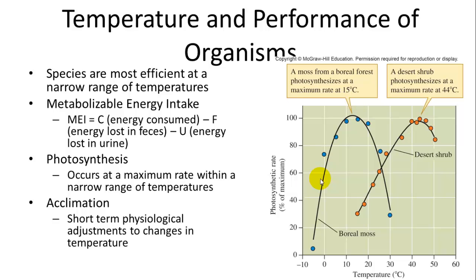With that allocation, species are most efficient at a narrow range of temperatures. Within that narrow range, their enzymes work best, heat transfer is optimal, and all metabolic processes use energy most efficiently. Beyond that, proteins, enzymes, and other things don't work properly or not as efficiently. The metabolizable energy intake, or MEI, is a function of the energy consumed minus the energy lost in feces and urine. The amount of energy within an organism is proportional to how much energy it consumes through food, less what is lost in urine and feces.